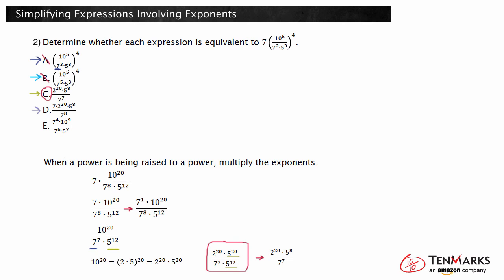Choice D has the same 2 to the 20th times 5 to the 8th on top, but it has a 7 on top and 7 to the 8th on bottom. To divide 7 over 7 to the 8th, subtract the exponents: 1 minus 8 is negative 7, so 7 to the 7th goes in the bottom of the fraction. This expression is equivalent to the original and is a correct answer. Choice E looks completely different. Looking at the base-7 powers: to divide 7 to the 4th over 7 to the 6th, subtract the exponents, giving 7 to the negative 2, so 7 squared goes in the bottom. The simplified answer should have 7 to the 7th in the denominator, not 7 squared. So choice E is not correct.